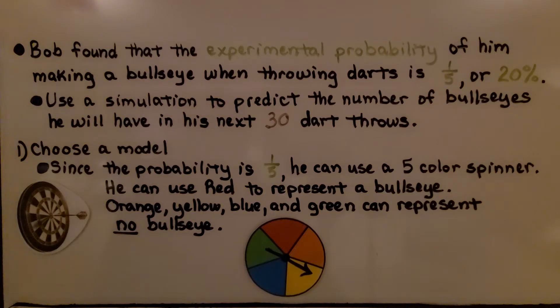He can use red to represent a bullseye. Orange, yellow, blue, and green can represent no bullseye.